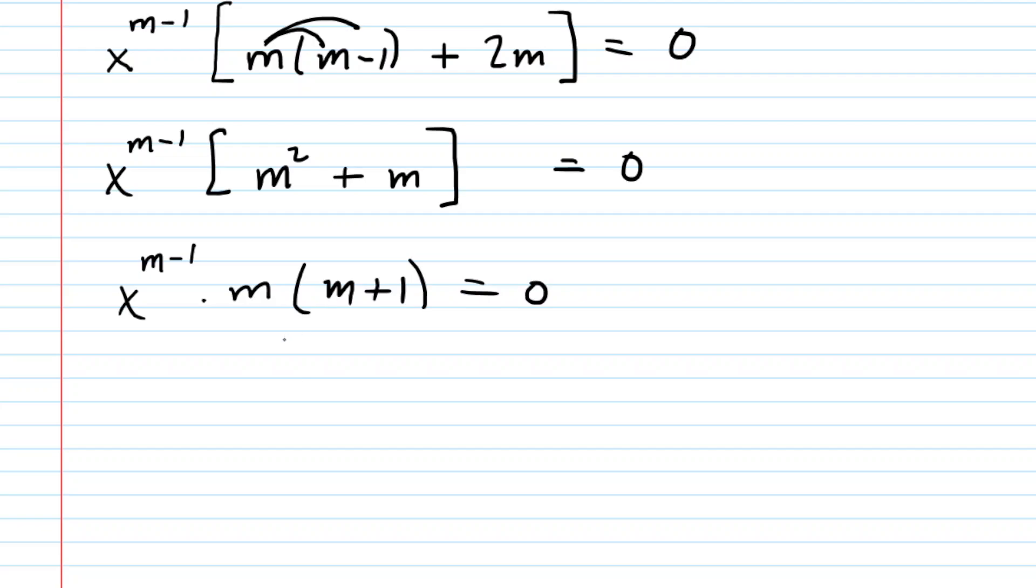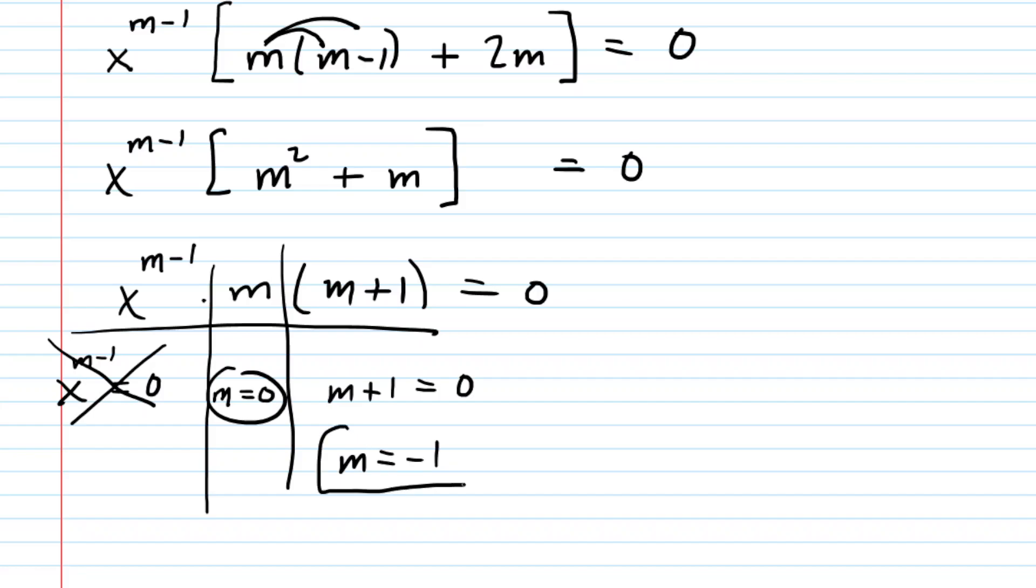Now we have the product of three terms, and we set them each equal to zero. For the first term, x to the power of m minus one equals zero, but we know that x to any power can never equal zero, so this equation has no solution. In the middle, we have m equals zero. At the end, we have m plus one equals zero. Subtracting one from both sides gives us m equals negative one.